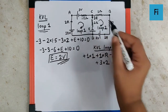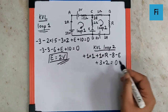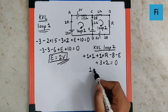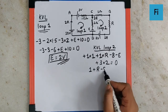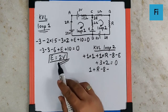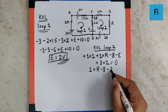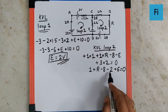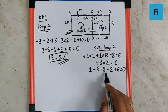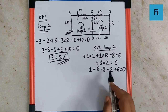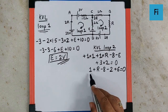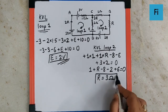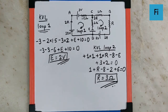Setting the sum equal to zero: 1 + R minus 8 minus E plus 6 = 0. Substituting E = 2: 1 + R minus 8 minus 2 + 6 = 0, which simplifies to R minus 3 = 0. Therefore, the resistance R equals 3 ohm, and that is the final answer.